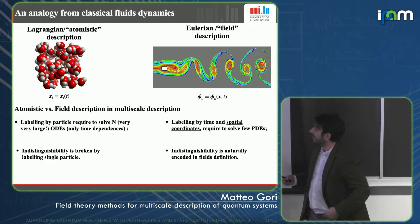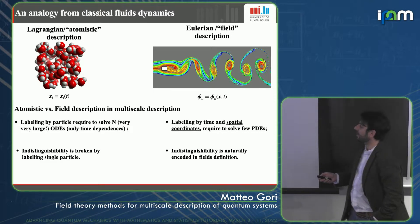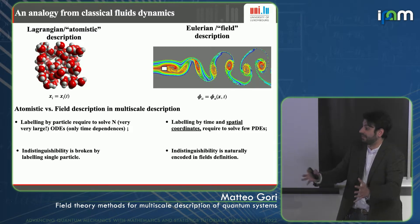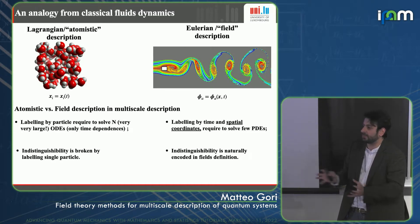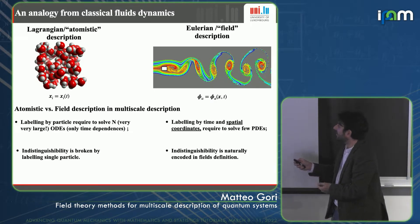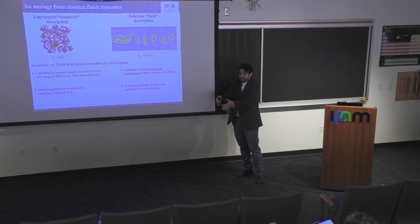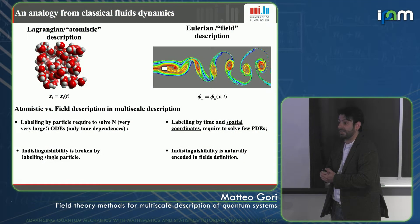There are advantages in using the field description when dealing with multiscale systems. In the Lagrangian atomistic approach, we follow each particle; to find global effects, we must solve all equations and then recollect degrees of freedom to see collective phenomena. In the field description, the spatial coordinates are there labeling the field configuration, making it easier to read what happens at the level of spatial degrees of freedom — even if we must solve partial differential equations rather than ordinary ones. If we can solve those PDEs, the amount of knowledge we gain is much larger in terms of multiscale behavior.